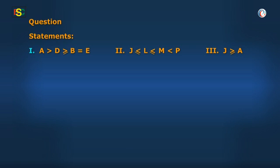The first statement is: A is greater than D, D is greater than or equal to B, and B is equal to E. So, A is greater than B.